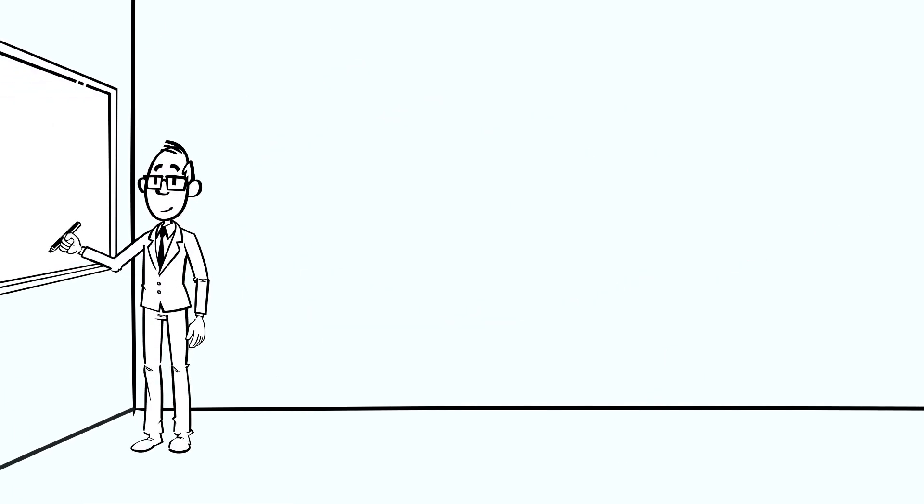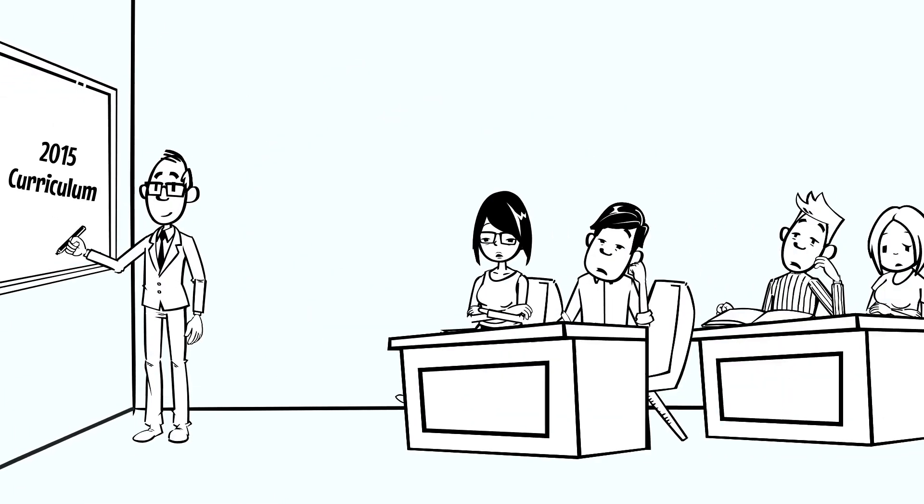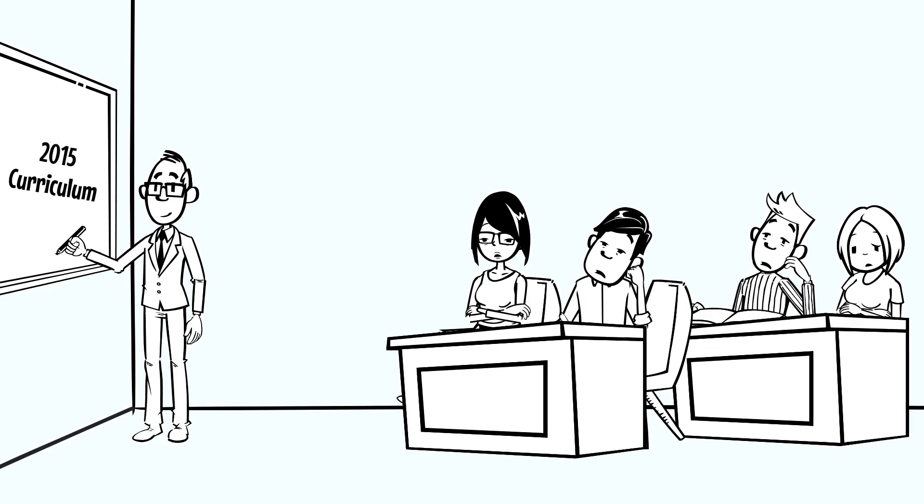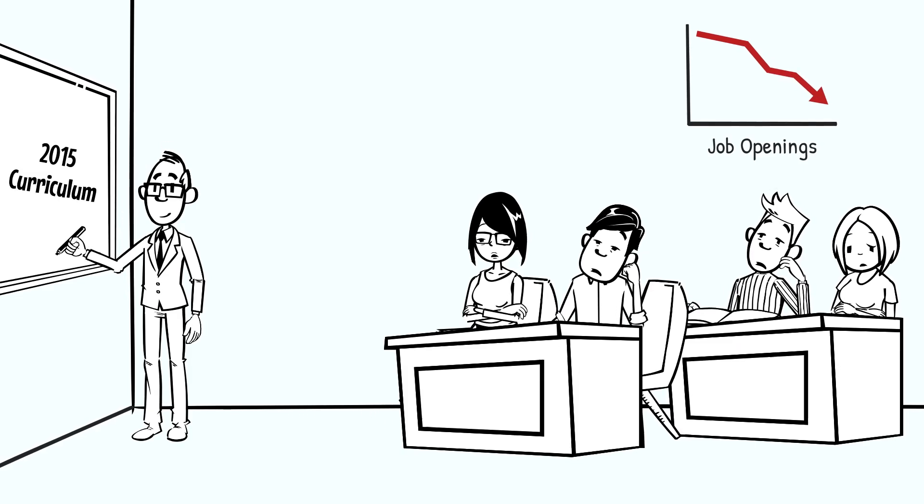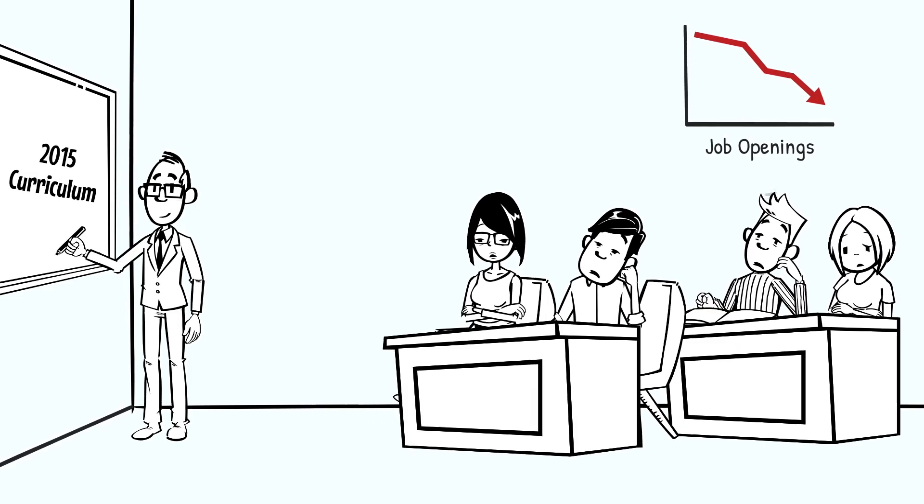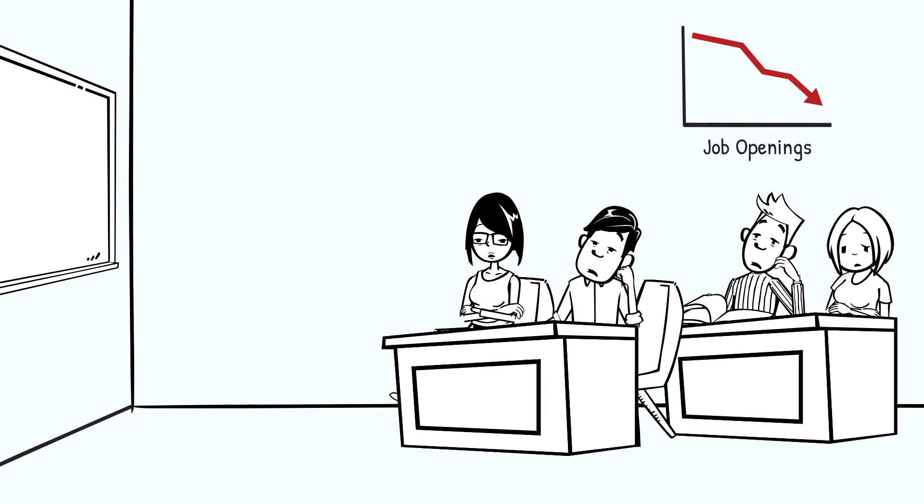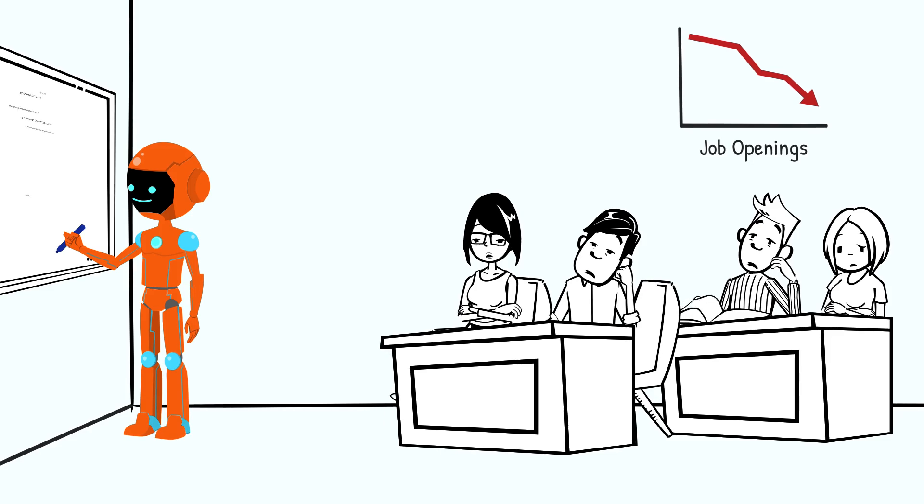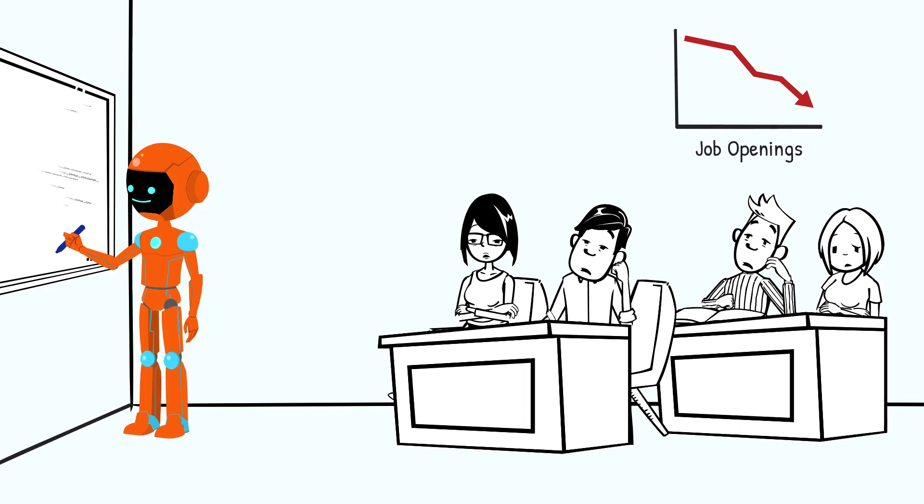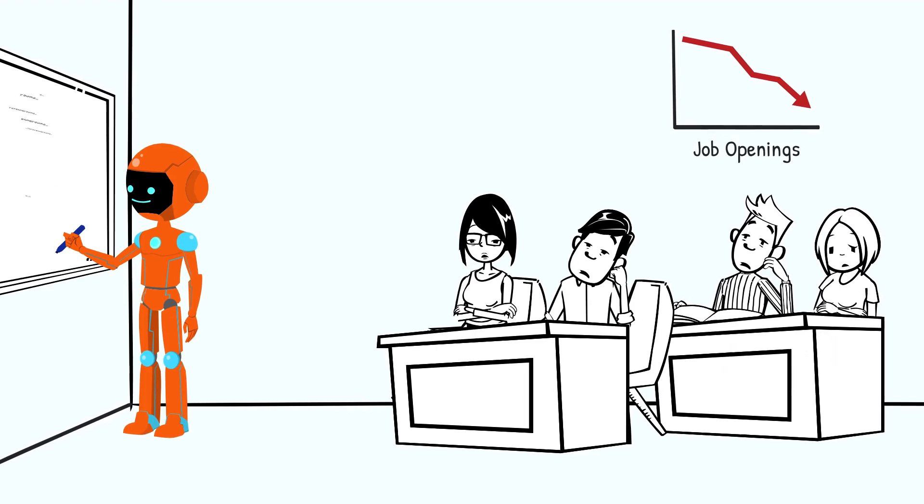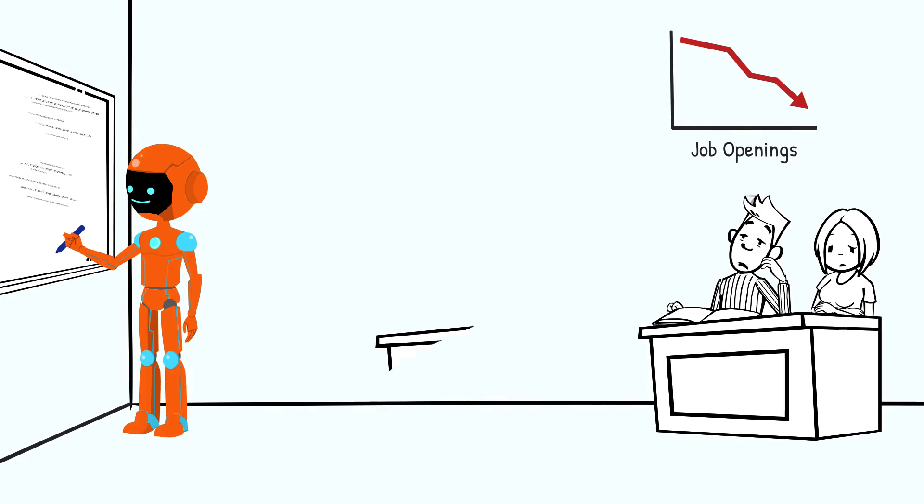The CS degree isn't dead, but it's limping. Not because the knowledge isn't valuable, but because the job market is shifting faster than your curriculum. Universities are still pushing the same material from 2015, while companies are automating everything those lessons prepared you for. Think about it. How many times did you write a sorting algorithm versus how many times ChatGPT just did it better?